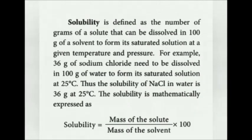Define solubility. Solubility is defined as the number of grams of a solute that can be dissolved in 100 grams of solvent to form a saturated solution at a particular temperature and pressure. The formula for solubility is: mass of solute ÷ mass of solvent × 100.